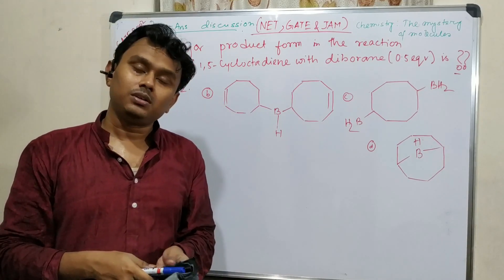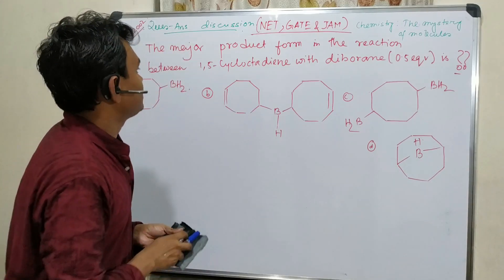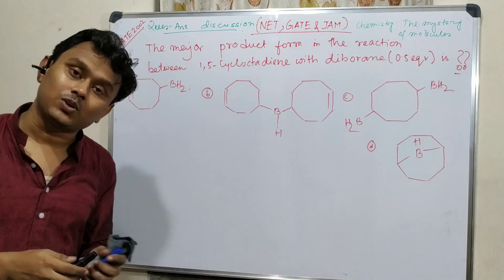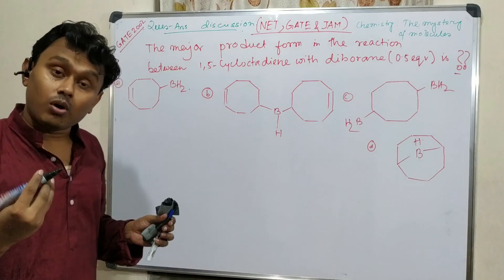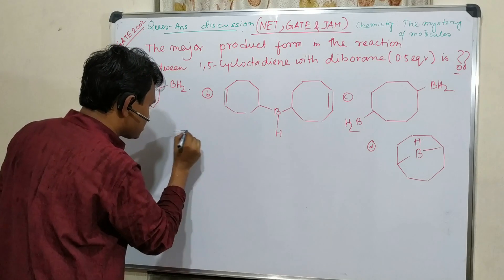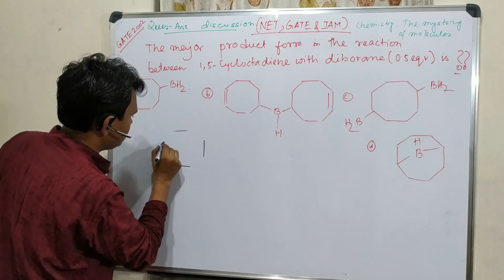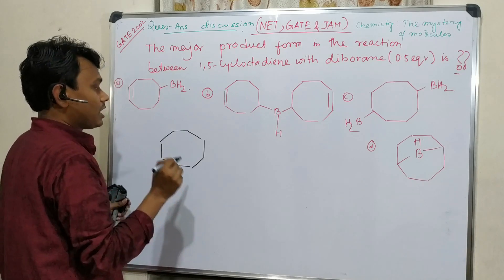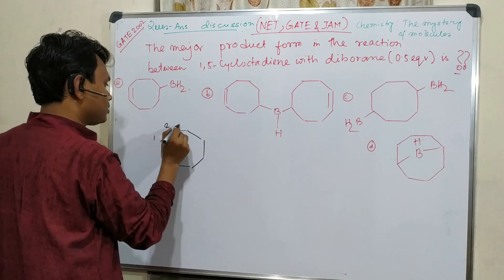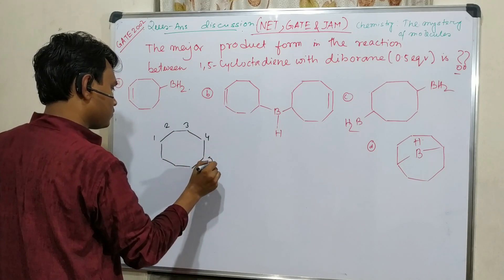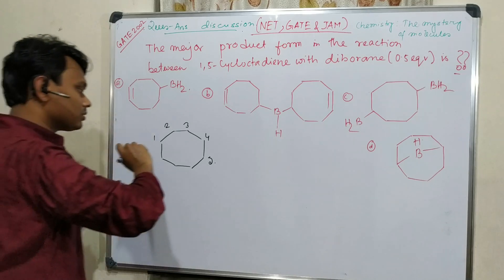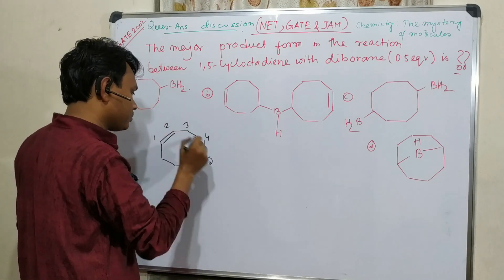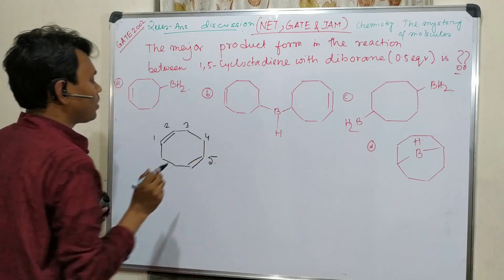If you read the question properly, it will be easier to predict the right answer. You should know what is 1,5-cyclooctadiene and what is diborane. There is a technique to draw cyclooctadiene perfectly: draw 4 lines and join them. Now numbering 1, 2, 3, 4, 5 — it starts from 1 and ends at 5. That is 1,5-cyclooctadiene.